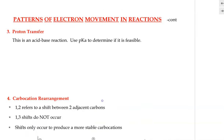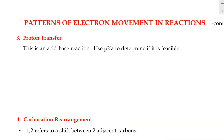The next pattern is proton transfer, which is essentially an acid-base reaction. To determine if this step is feasible, we need to use pKa to determine whether an acid-base reaction will occur. Proton transfer steps happen very often in organic reactions, so it is very important to be able to determine easily whether a proton transfer step would happen or not.